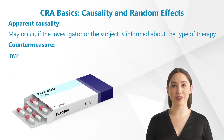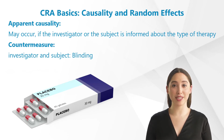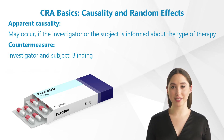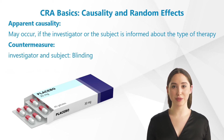Apparent causality may also occur if the investigator or the subjects are informed about the type of therapy. The situation is comparable to the placebo effect, based on convictions instead of knowledge. If a subject knows that he or she has been treated with the new therapy and not a placebo, the subject will expect to see an improvement in condition. Equally, an investigator who knows a subject is being treated with a new therapy would rather expect to see signs of improvement. Both factors cause a distortion of data, which is termed bias in clinical usage.